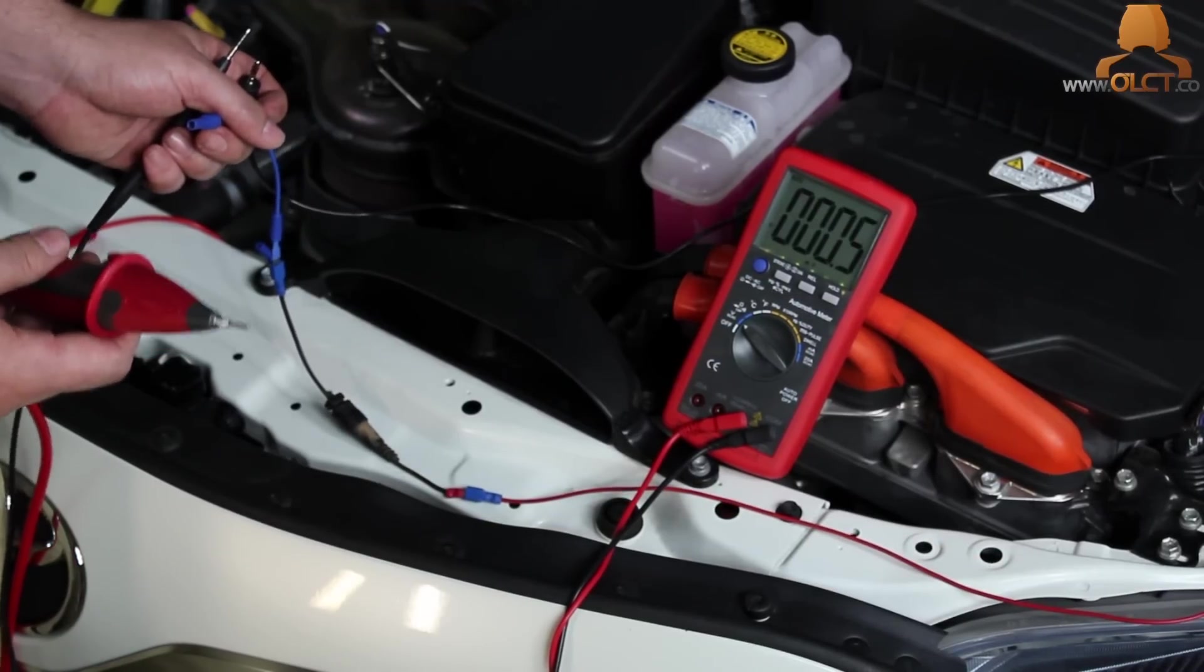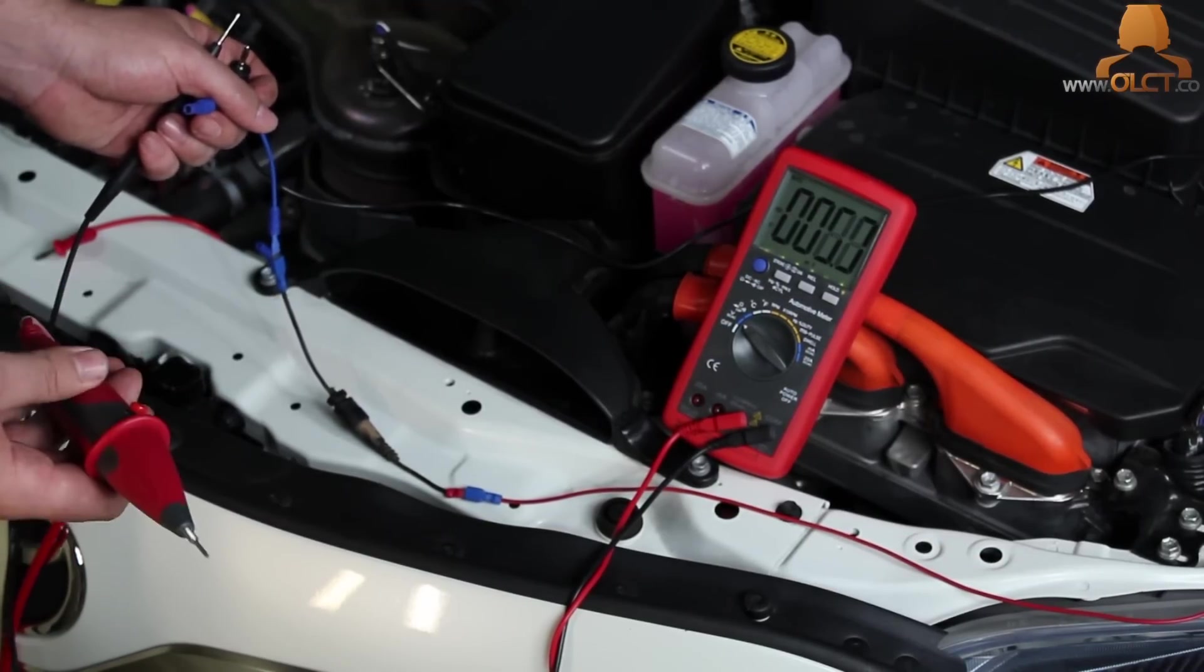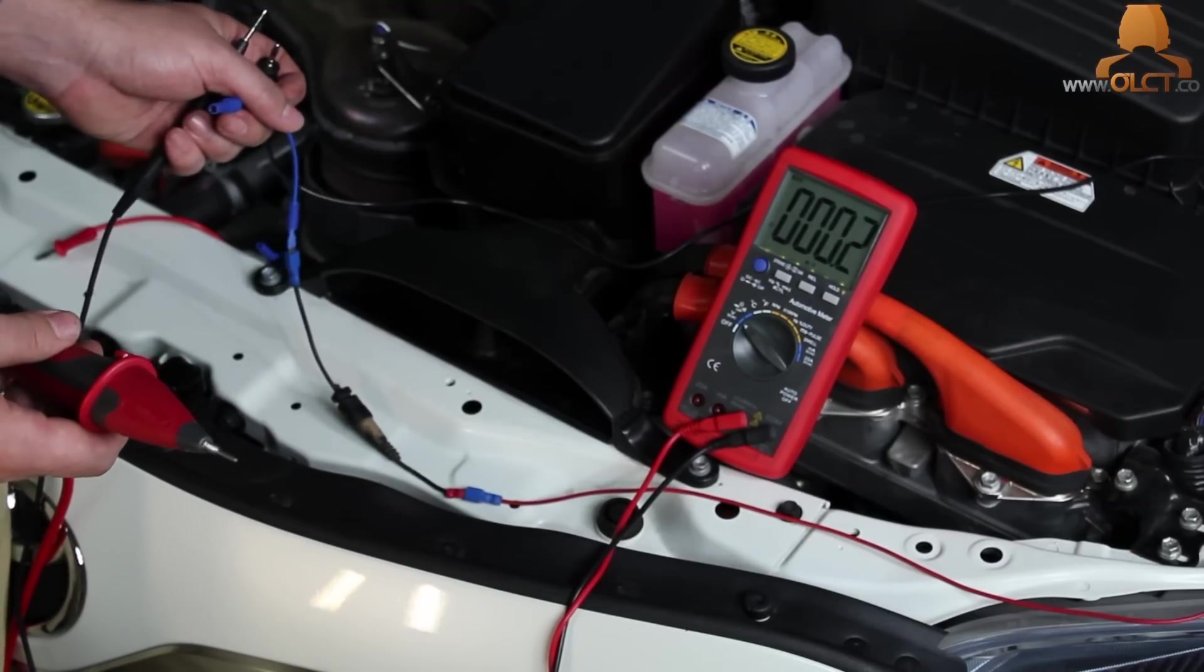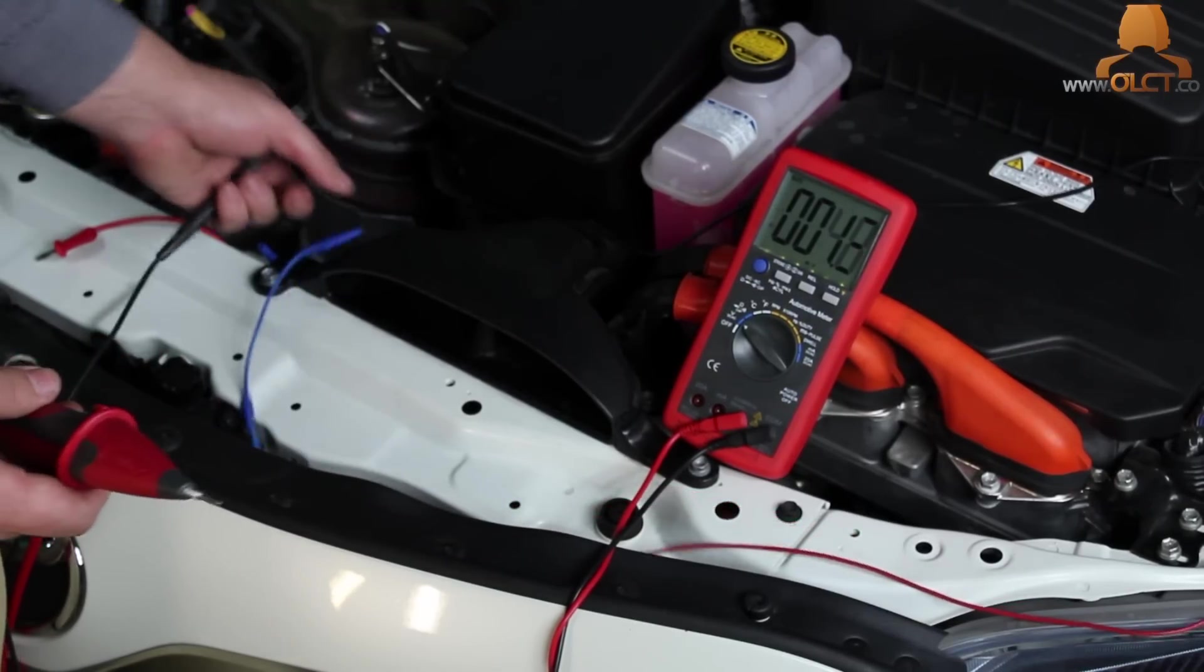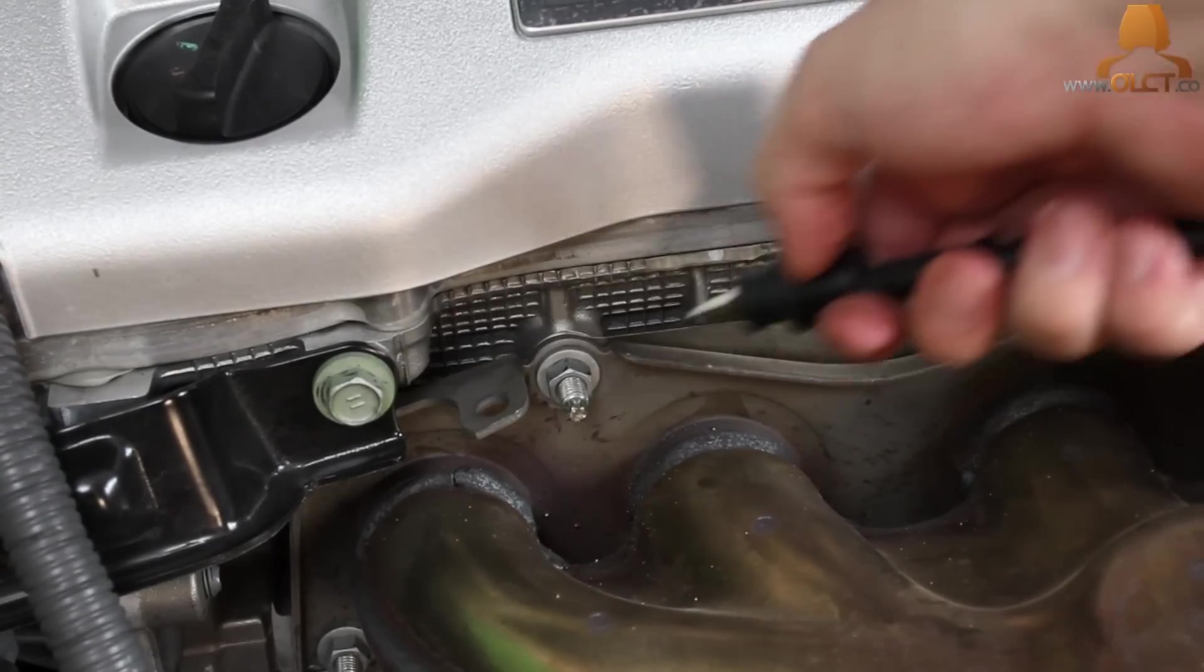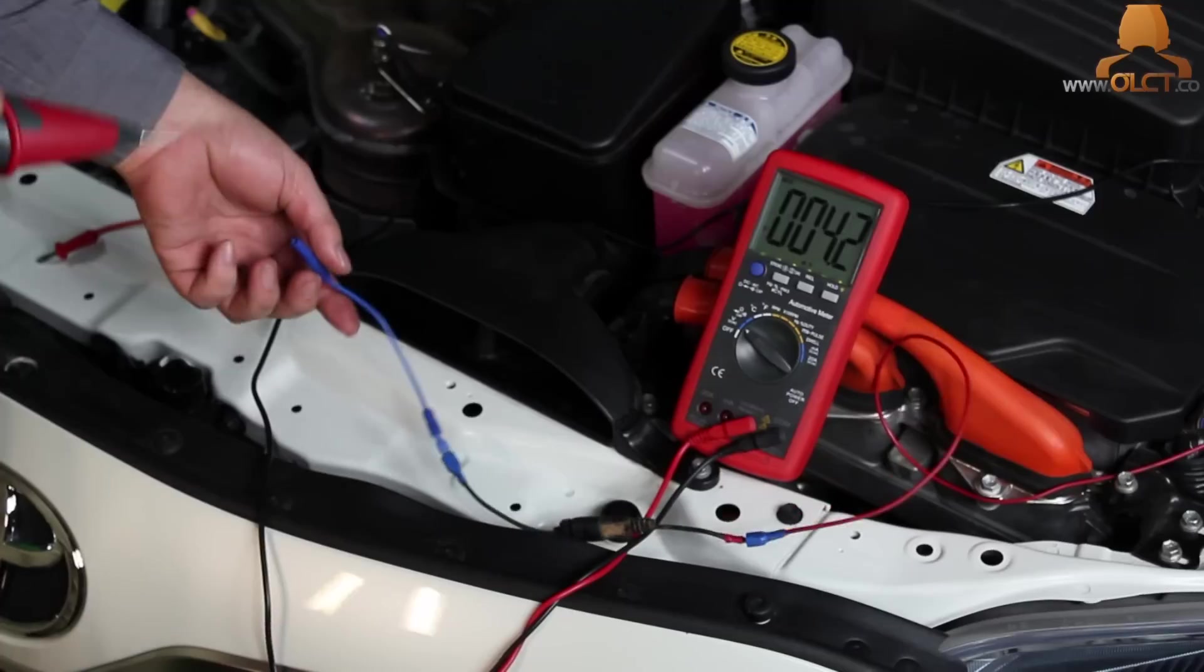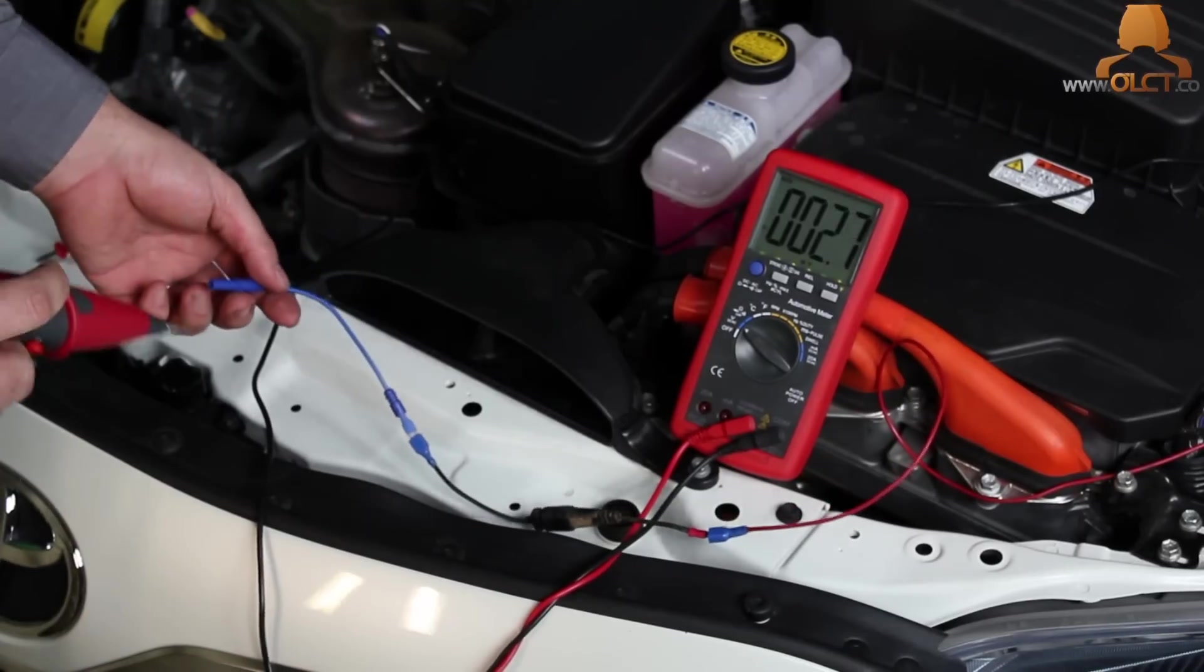Step one is both leads in the connector and dependent on that reading, you can rule in or out one of the three possible faults. Now, what we do is we move the black lead to the ground.